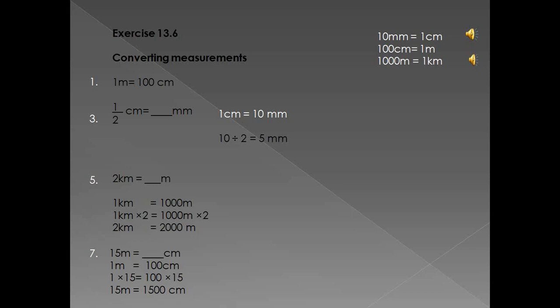Let's do another one. Number five: two kilometers equals how many meters. We know that one kilometer equals 1,000 meters. So what did we do with the one kilometer to make it two kilometers? We times it by two. When you multiply one side of the equation, you have to multiply the other side by two as well. So one times two is two kilometers, and 1,000 times two is 2,000 meters. That's your answer.